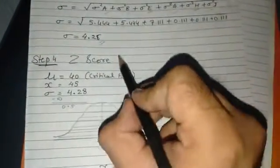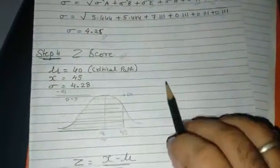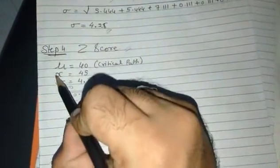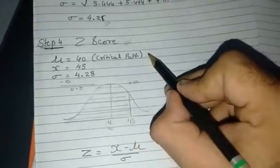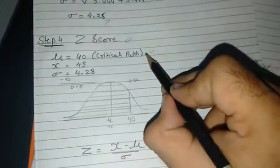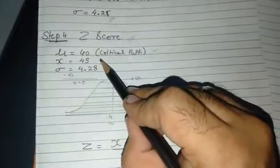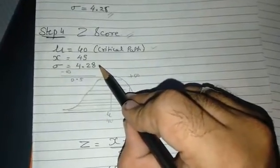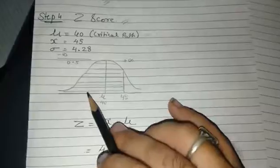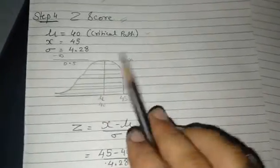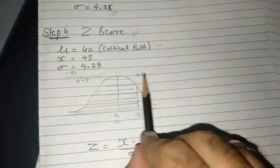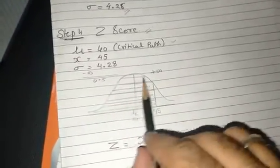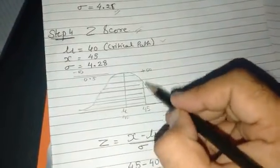After that, step 4 is finding Z-score. Z-test requires three things: μ, X, and standard deviation. μ is 40 from the critical path, X is 45, and standard deviation is 4.28. We have to draw the bell-shaped curve, and the μ is 40 and X is 45. We have to find the time before 45 days.